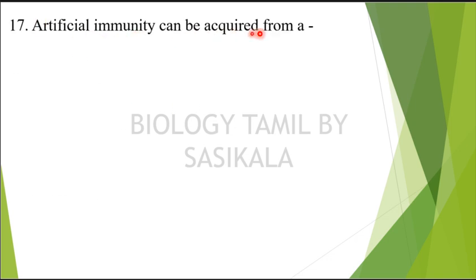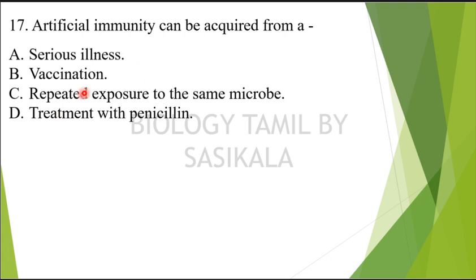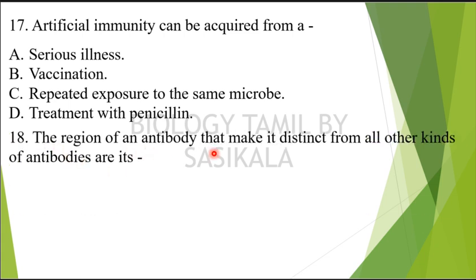Question 16: Artificial immunity can be acquired from what? The choices are: serious illness, vaccination, repeated exposure to the same microbe, treatment with penicillin. How are we using artificial immunity? Vaccination is the method for acquiring artificial immunity.